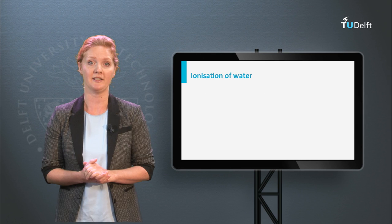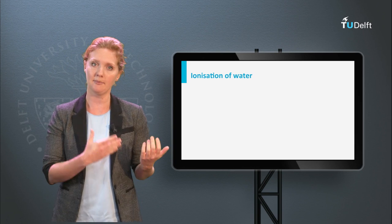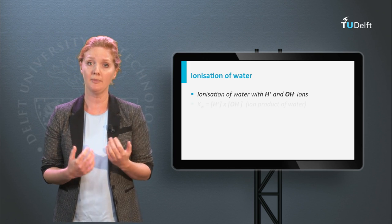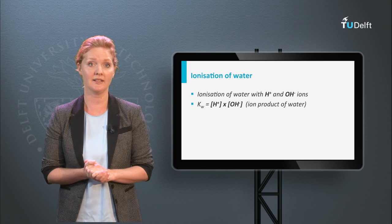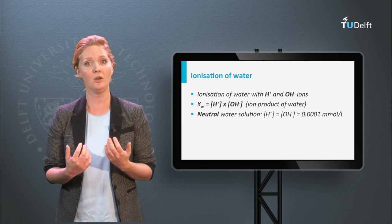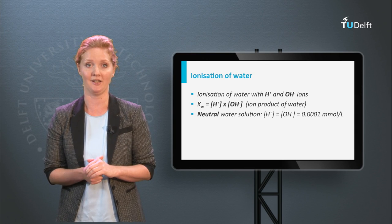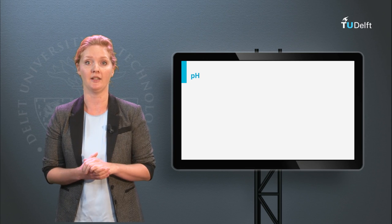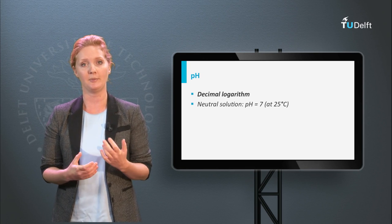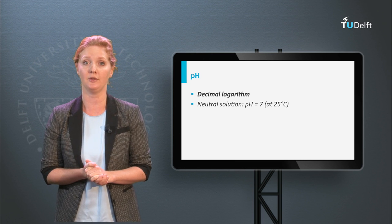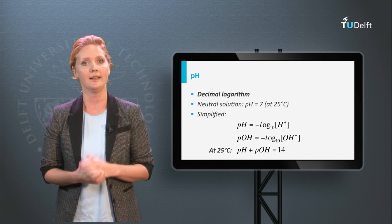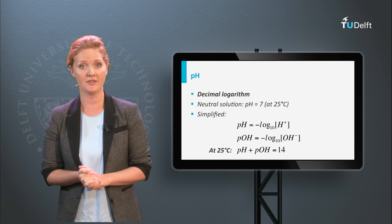One of the most important chemical properties of water is that it can be both an acid and a base, because water ionizes into H⁺ ions and OH⁻ ions. The ionization is an equilibrium reaction for which an equilibrium constant K can be determined. For a neutral solution, H⁺ equals OH⁻ equals 0.0001 millimoles per liter. The concentration of hydrogen ions is usually denoted as the negative logarithm — pH. A neutral solution has a pH of 7.0 at a temperature of 25 degrees Celsius. A lower pH, meaning a higher concentration of hydrogen ions, indicates an acid solution, and water with a pH above 7 is a base.